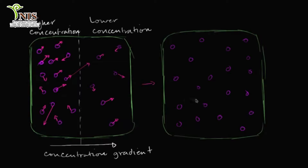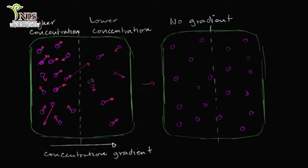Once we let enough time go by, we no longer have a concentration gradient — the concentration is uniform throughout. Even drawing that imaginary dashed line, we now have the same concentration on both sides. There is nothing magical here: the molecules don't somehow know to move toward lower concentration. Things are still moving left to right and right to left, but now with equal numbers on each side, the probability is equal in both directions — this is equilibrium.